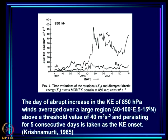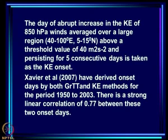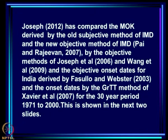A characteristic of the large-scale Indian summer monsoon onset is an abrupt increase in kinetic energy over a similar box (40–100°E, 5–15°N) — as seen earlier in this lecture. The day of abrupt kinetic energy increase above a threshold of 40 m²/s² persisting for five consecutive days is taken as the KE onset. Xavier et al. derived onset days by both GRTT and KE methods for 1950–2003 and found the two are highly correlated, unsurprisingly since both examine the same box.